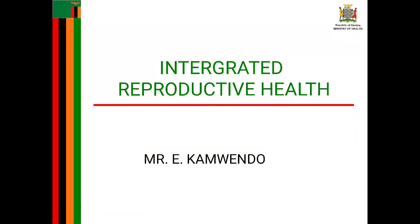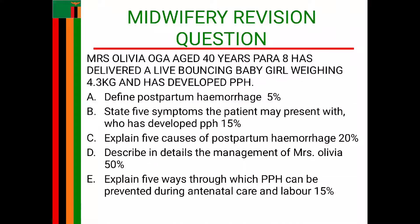We'll look at a question for integrated reproductive health. The question reads: Mrs. Olivia Ogre, aged 40 years, para 8, has delivered a live bouncing baby girl weighing 4.3 kg and has developed postpartum hemorrhage. Question A: define postpartum hemorrhage. Question B: state five symptoms the patient may present with. Question C: explain five causes of postpartum hemorrhage. Question D: describe in detail the management of Mrs. Olivia. Question E: explain five ways through which PPH can be prevented during antenatal care and labor.